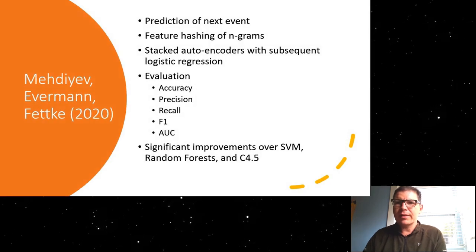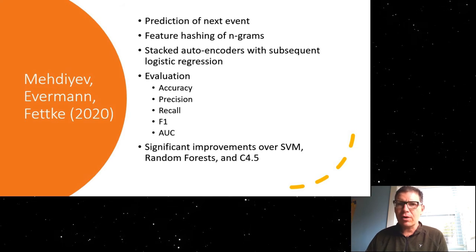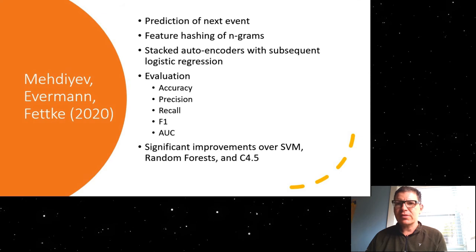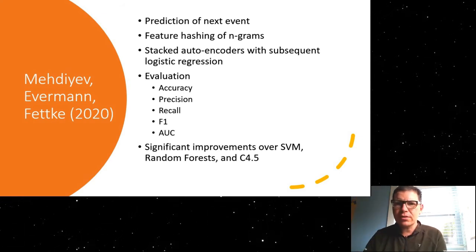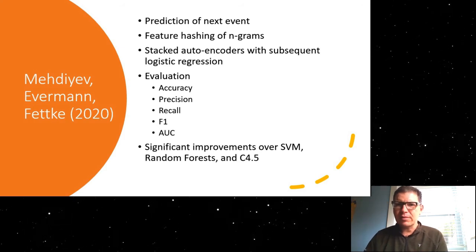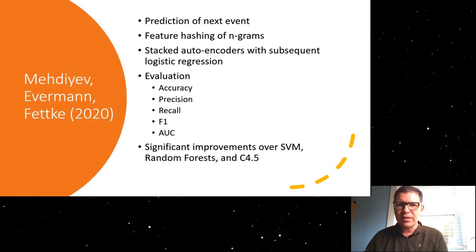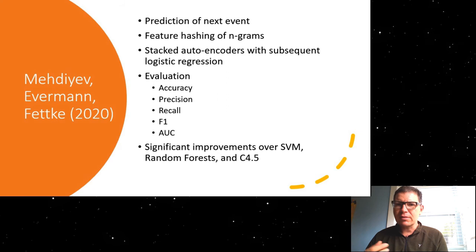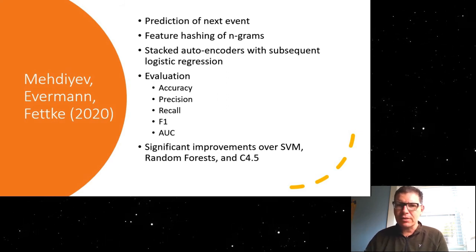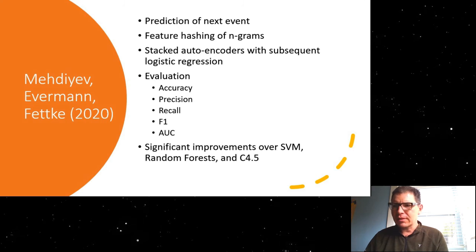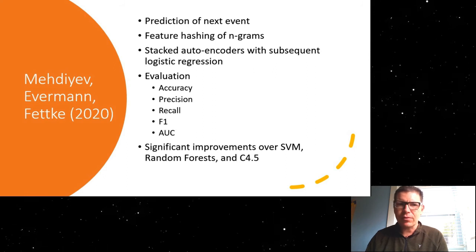A later paper, again by myself with some colleagues there, used a different architecture for also predicting the next event. There we used stacked autoencoders, so we stacked a series of autoencoders to encode the features, and then used the logistic regression to make the actual prediction of the next event. Our evaluation at that point was a little bit more sophisticated. We looked at not only accuracy, but also precision, recall, area under the curve, et cetera. And in that paper, we showed significant improvements over classical or traditional prediction or classification mechanisms such as support vector machines, random forest, et cetera.